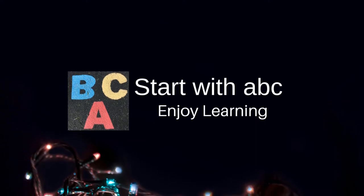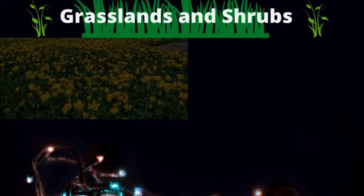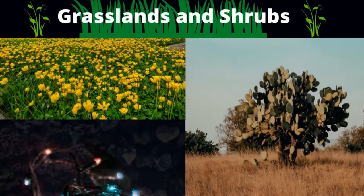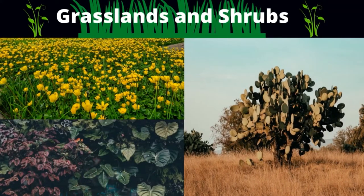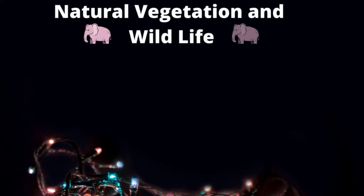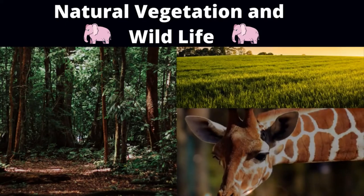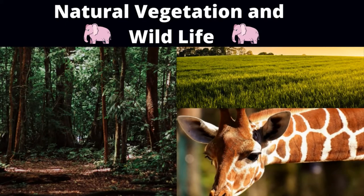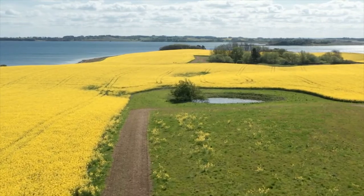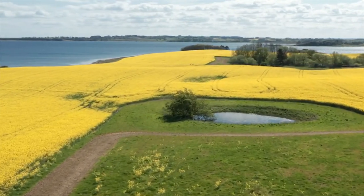Hello everyone, welcome back to Start with ABC. Today we are going to continue our natural vegetation and wildlife chapter. We are going to cover the grasslands and the shrubs topic. In our previous video we had done the forests, so check out the link given in the description box below.